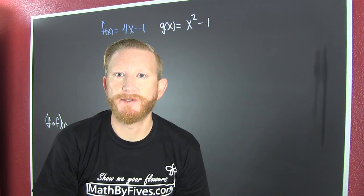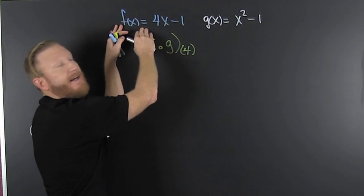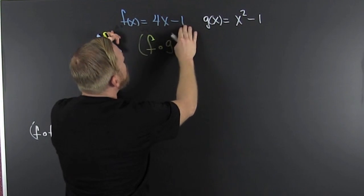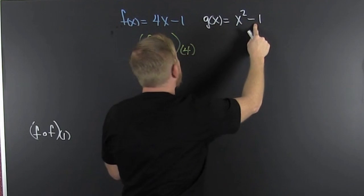We're evaluating function composition. What? I'm up here. Where? f of x is 4x minus 1. And g of x is x squared minus 1.